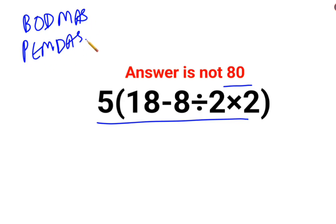Okay, in both the cases, we first need to focus on brackets or parentheses. So let's just do this: 18 minus 8 divided by 2 multiplied by 2.